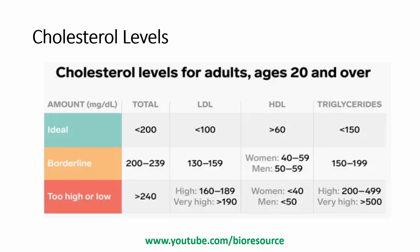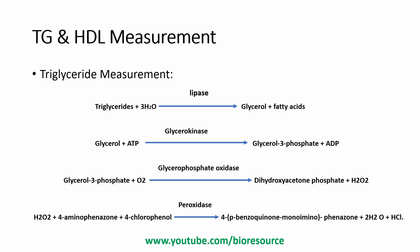Ideally, total cholesterol should be less than 200 mg/dL, LDL should be less than 100 mg/dL, HDL should be greater than 60 mg/dL, and triglycerides less than 150 mg/dL. A total cholesterol of 200–239 mg/dL is considered borderline, and above 240 mg/dL is very high. For LDL, 130–159 mg/dL is borderline, 160–189 is high, and above 190 is very high. Triglycerides above 500 mg/dL are considered very high, and medication may be prescribed for very high cholesterol levels.